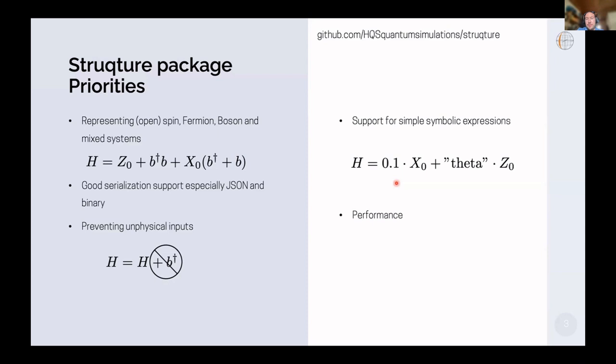Next priority is that we want to have some support for symbolic values, which is always nice for parameter sweeps. As I mentioned before, we have these building blocks and then prefactors, and that basically means the prefactors can be floating point values or they can be symbolic entities like a variable theta or a simple expression like sine of theta.